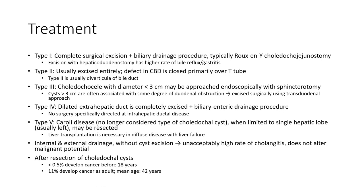Type 2 — usually excised; tiny defects in the common bile duct are closed primarily over a T-tube. Type 3 — choledochocele with diameter less than 3 cm may be approached endoscopically with sphincterotomy.